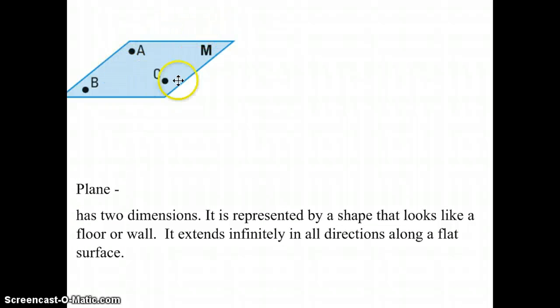The way you name a plane is you must have at least three points on the plane to use. You see that these are points, and M is not a point. So we can use any combination of the points, ABC, CAB, ACB.